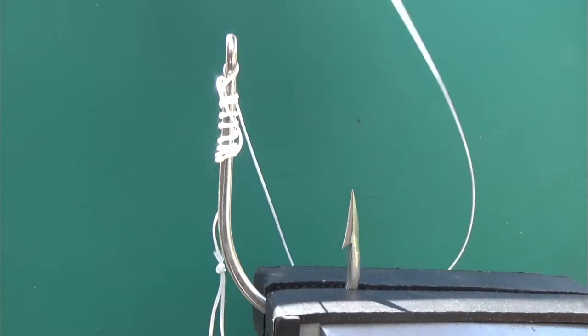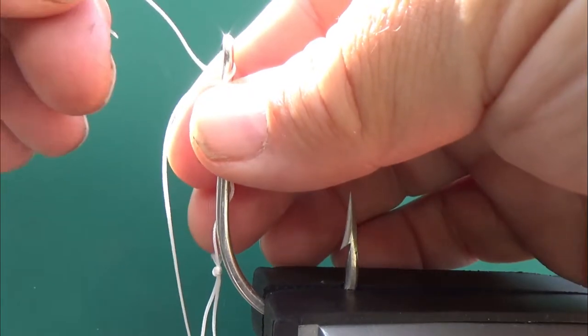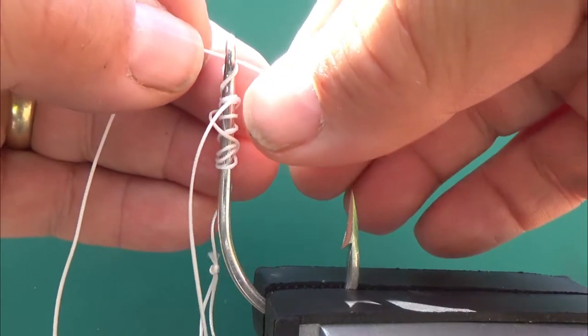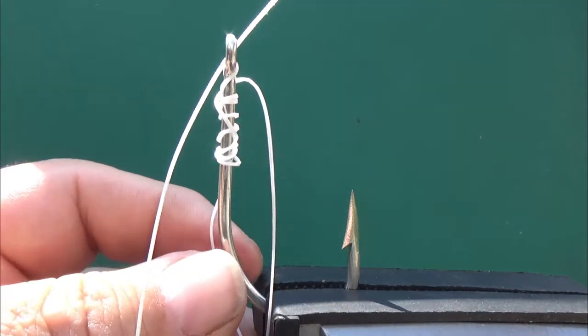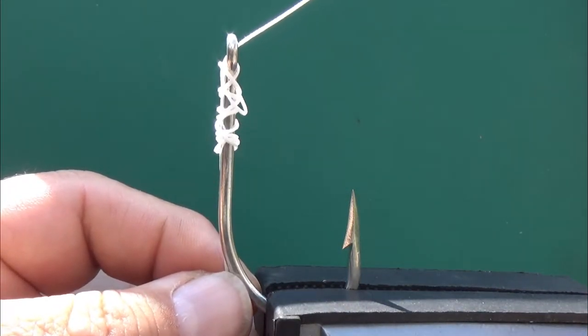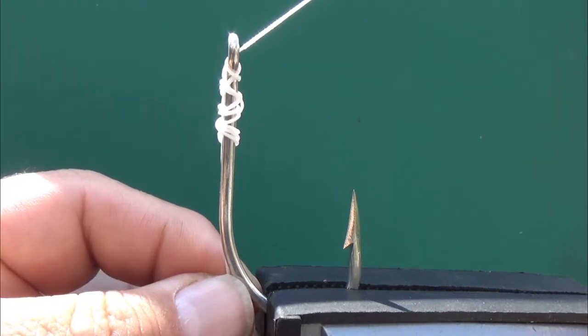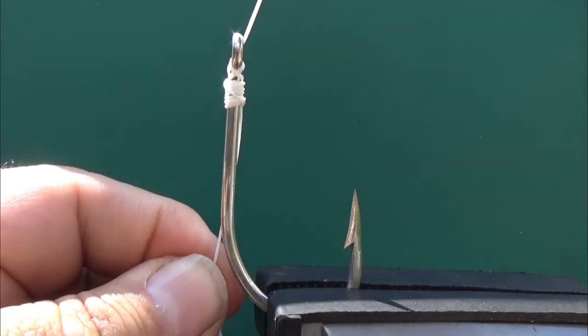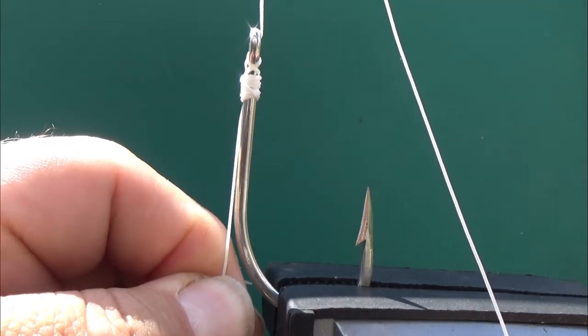Then you put the end of the line back through the eye. At this point, if you're using line, you might want to moisten it, and then just pull until it all tightens up nicely, until it gets up to the hook.